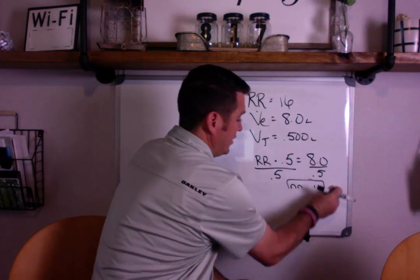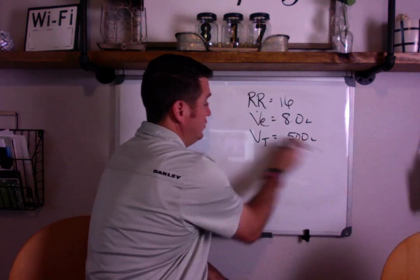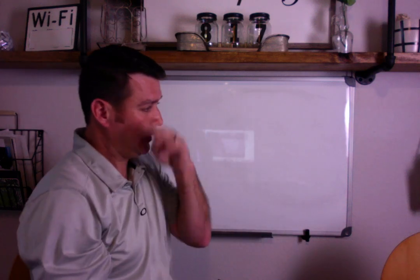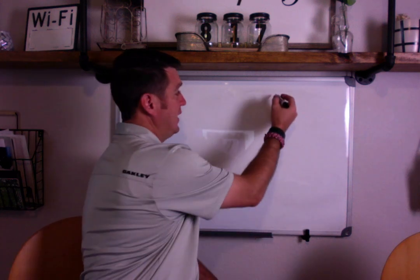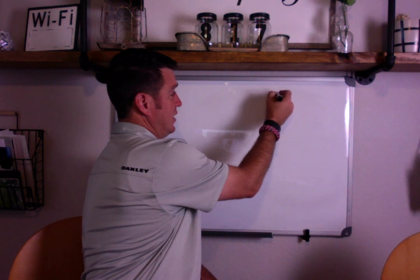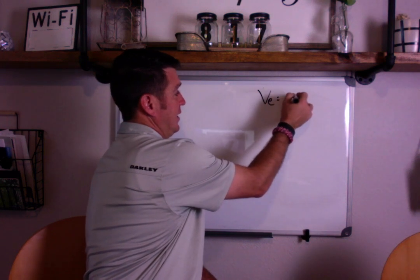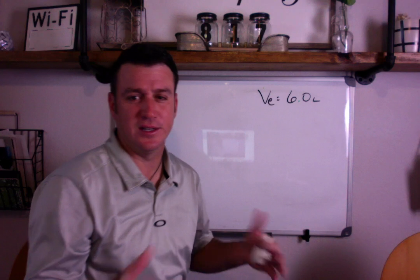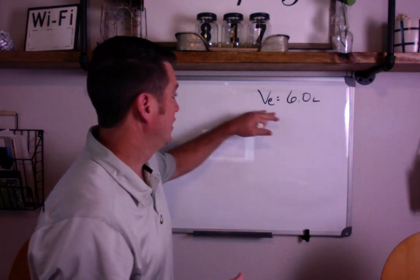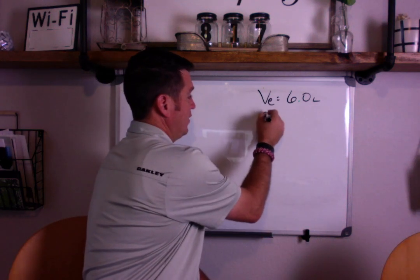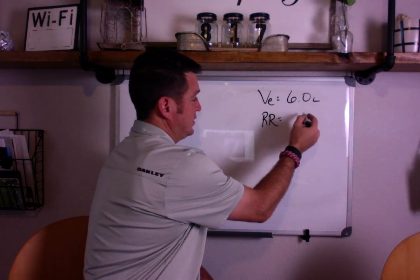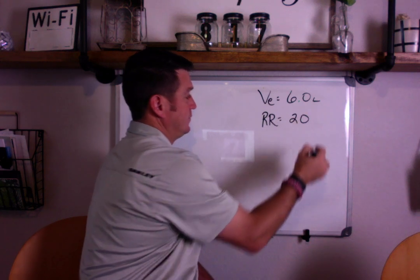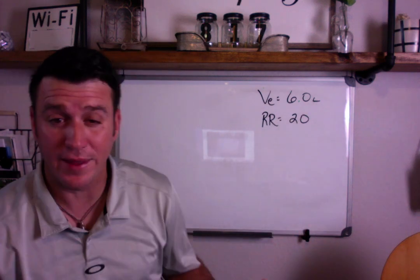Now, let me give you a real-life practical where you might actually use this formula. You have a patient doing a spontaneous breathing trial. And you go in the room, and you find their minute ventilation to be 6 liters per minute. I'm using easy numbers just to get the idea. So, you find their minute ventilation to be 6 liters per minute, and their respiratory rate equals 20.